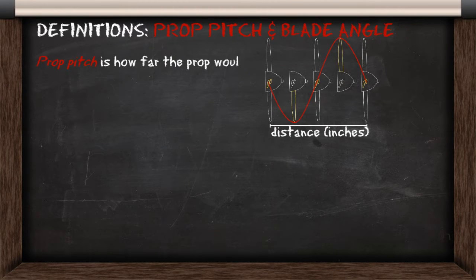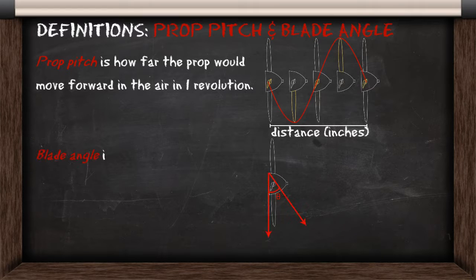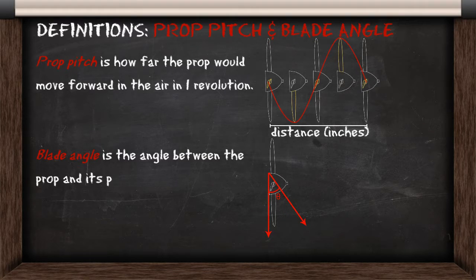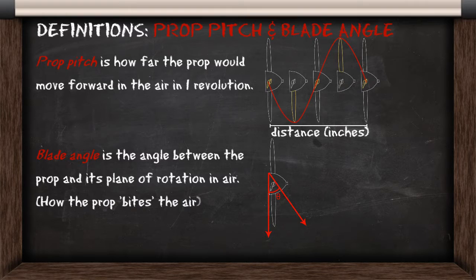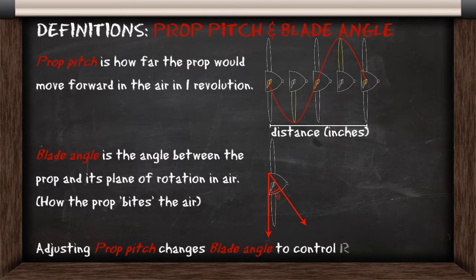Propeller pitch is how far the propeller would move through the air in one revolution. Blade angle is the angle between the propeller and its plane of rotation in the air. So when we adjust prop pitch, we're actually adjusting the blade angle, which determines our RPM and thrust.